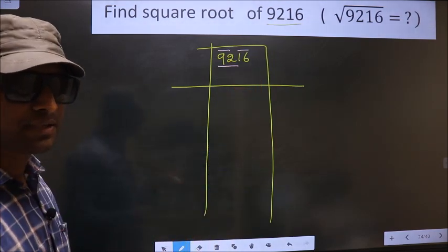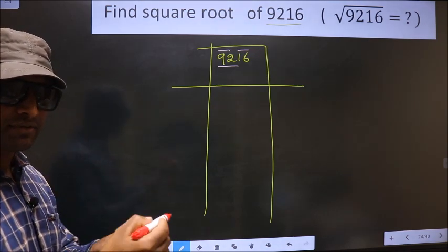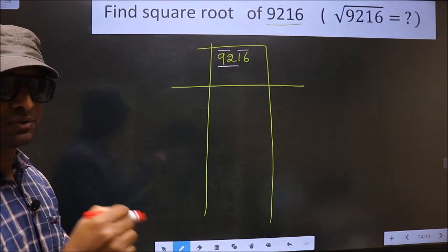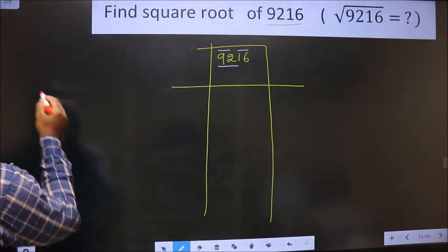92 is not a perfect square. So now we should check between which two perfect squares does 92 lie. And the perfect squares are these numbers.